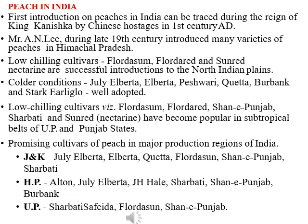Now let's talk about how peach came to India. It is said that peach came to India during the reign of King Kanishka by Chinese hostages in the first century AD. During the late 19th century, many varieties of peach were introduced in Himachal Pradesh. Some low-chilling cultivars like Florism, Florida Red, and Sun Red Nectarine are successful contributions to north Indian plains. Some cultivars suited for colder conditions are July Alberta, Alberta, Peshawari, Kuita, Gulpeng, and Stark Early Glow.